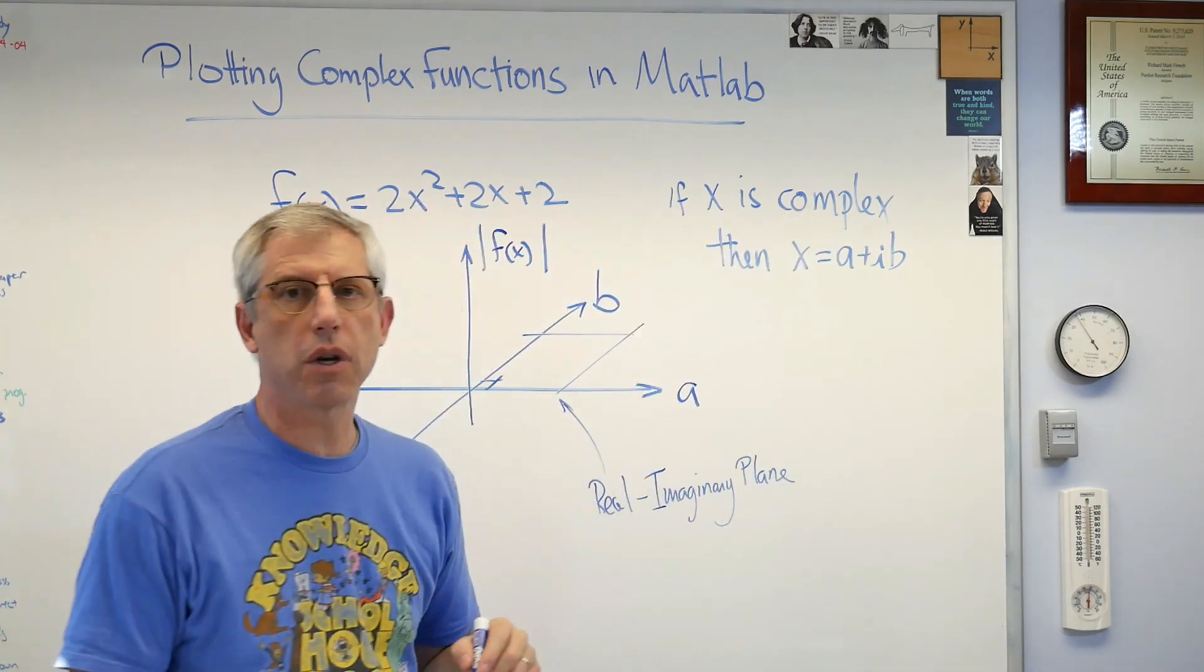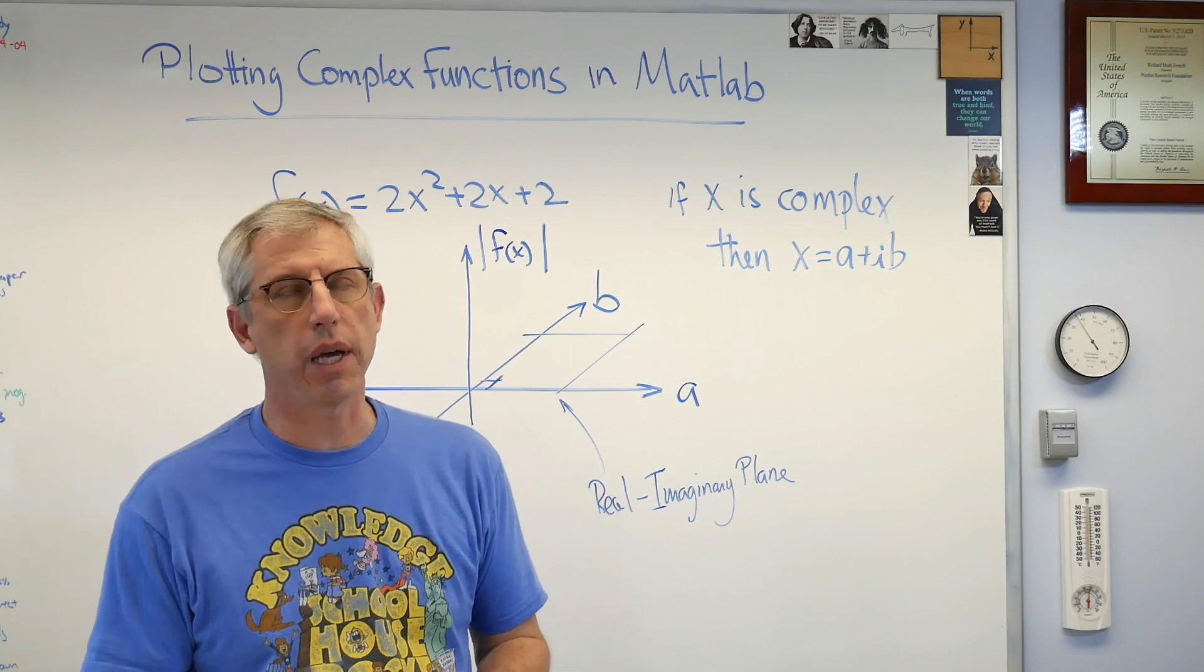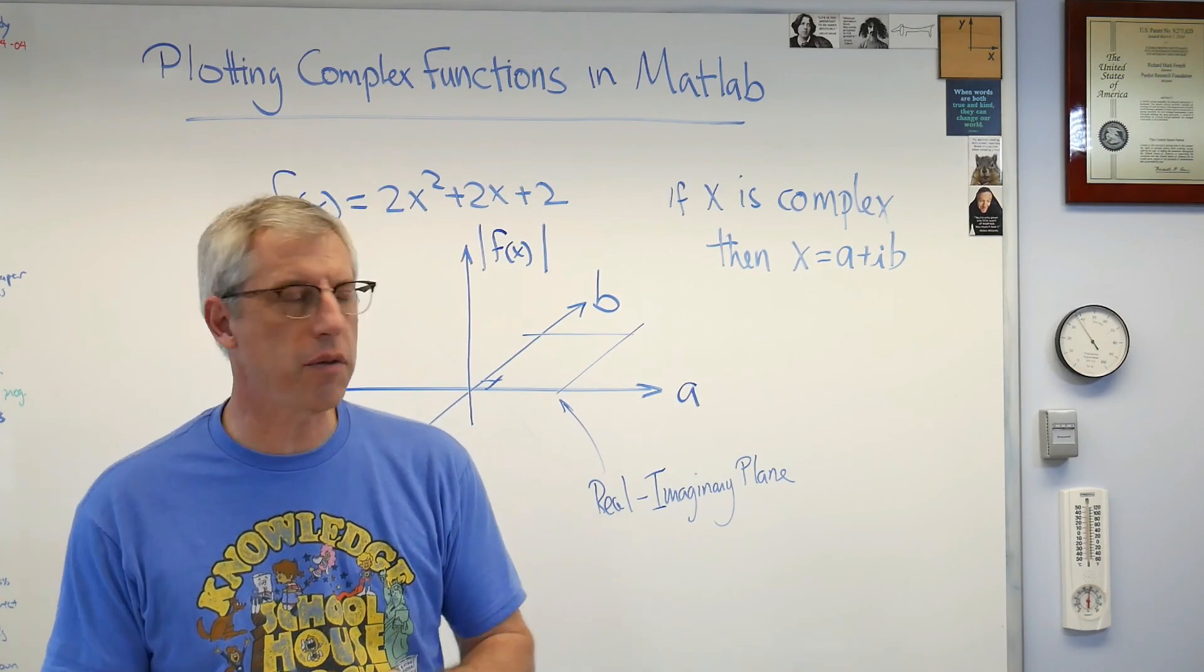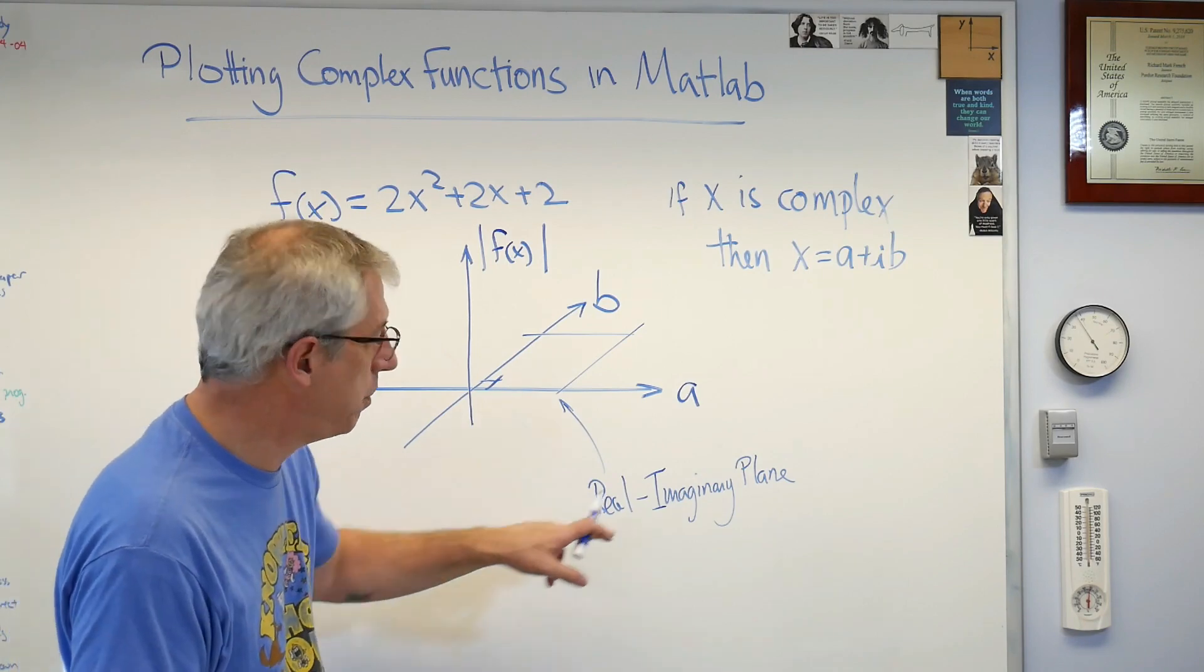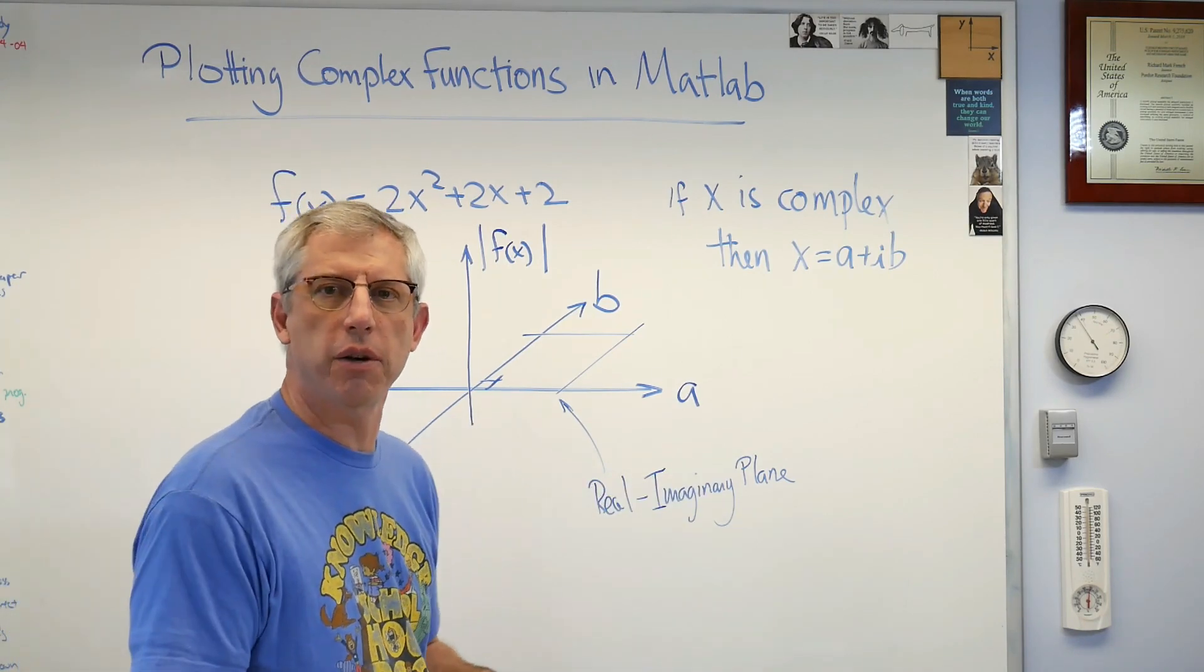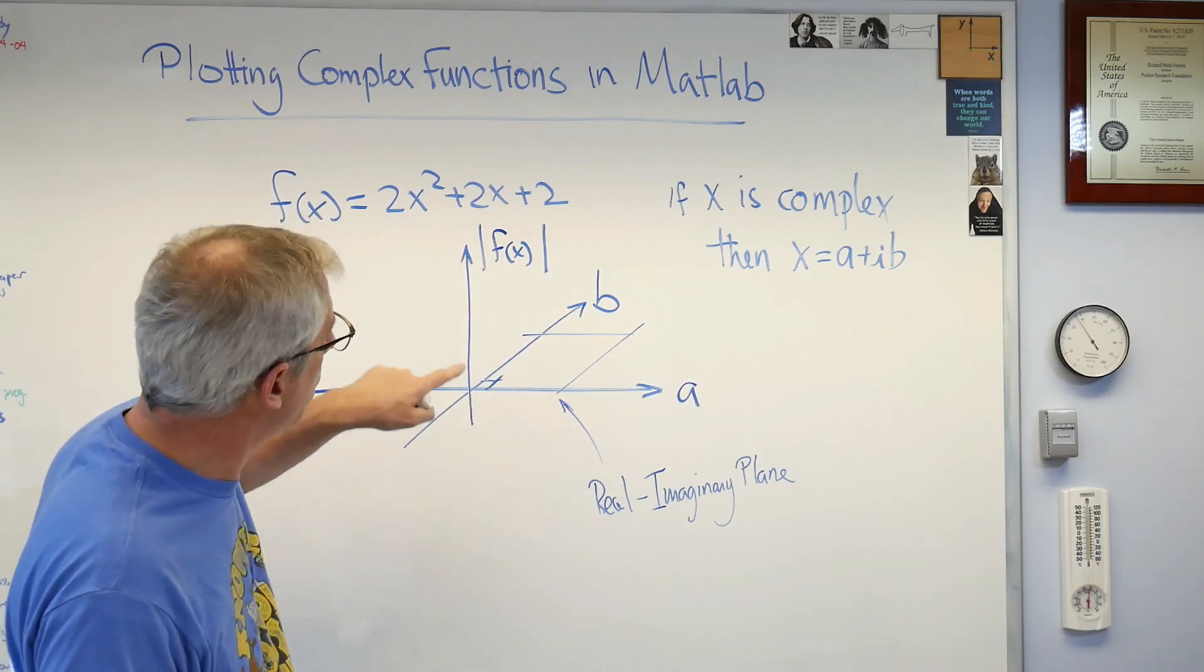This plane is sometimes called the real imaginary plane, or sometimes it's called the Argand plane, A-R-G-A-N-D, after the name of a mathematician. That would be a good band name—I play triangle for Real Imaginary Plane.